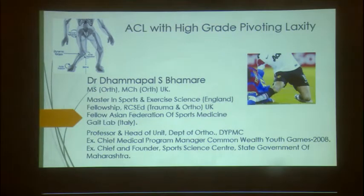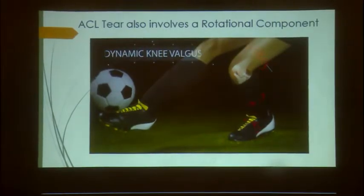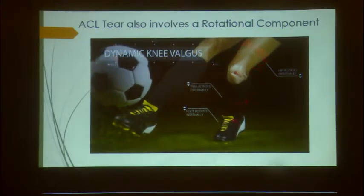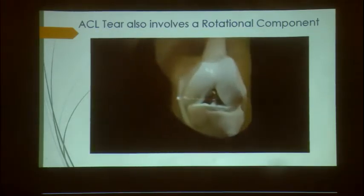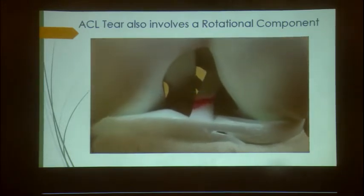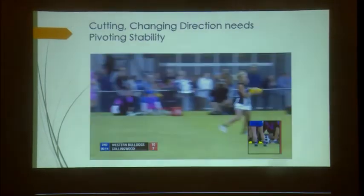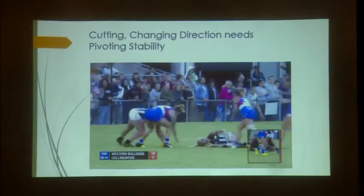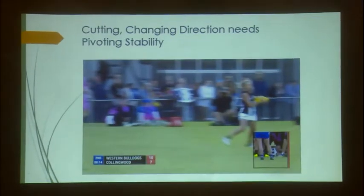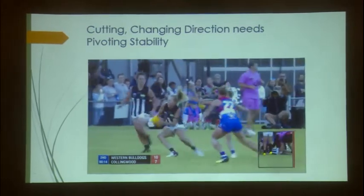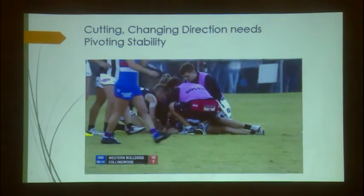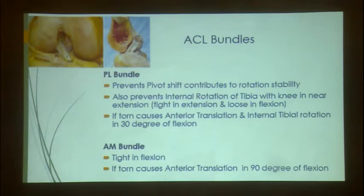Looking at this video, the mechanism involves dynamic valgus and rotational forces — it is not just anterior-posterior forces that cause the ACL tear. There is a large rotational component involved. You can see her left knee: dynamic valgus, internal rotation, and significant rotational components — and she had an ACL tear.